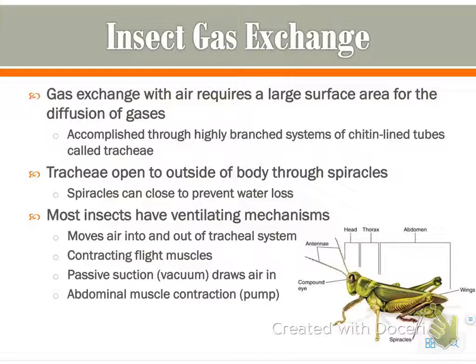For gas exchange, insects require a large surface area for diffusion. There are highly branched systems within insects called tracheae — chitinous tubes that open to the outside of the body through spiracles, which also help prevent water loss. Most insects also have ventilating mechanisms that move air in and out: contracting flight muscles, drawing air in like a vacuum, and contracting the abdominals like a pump.